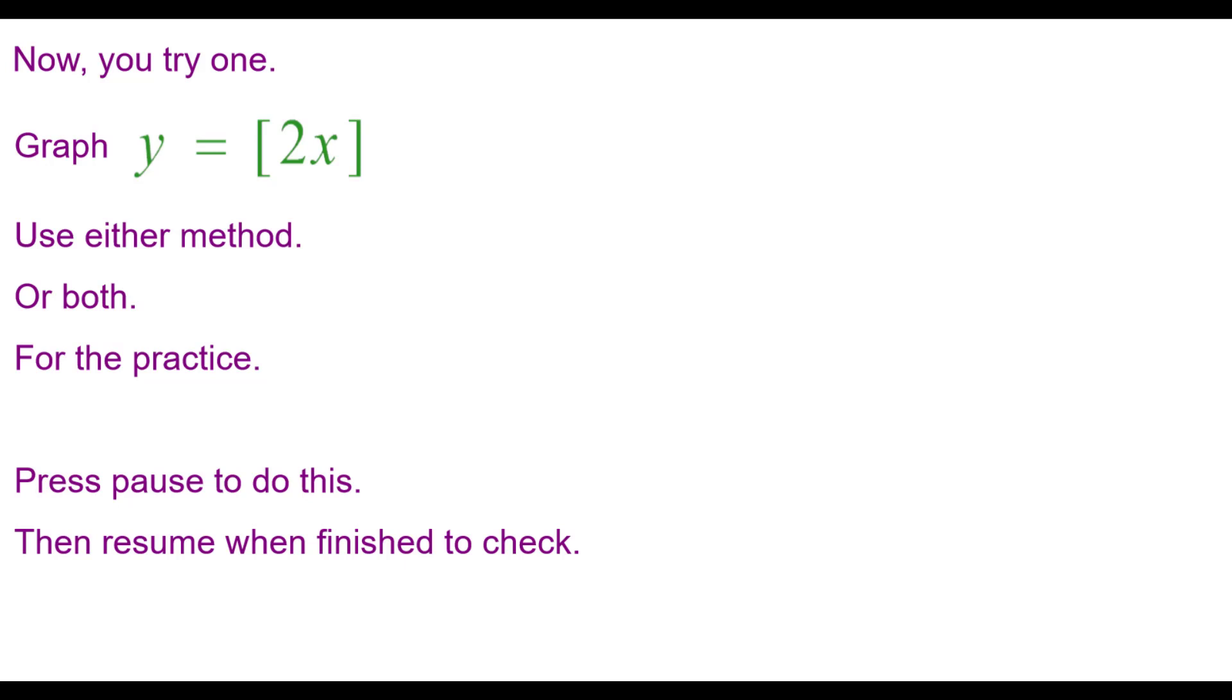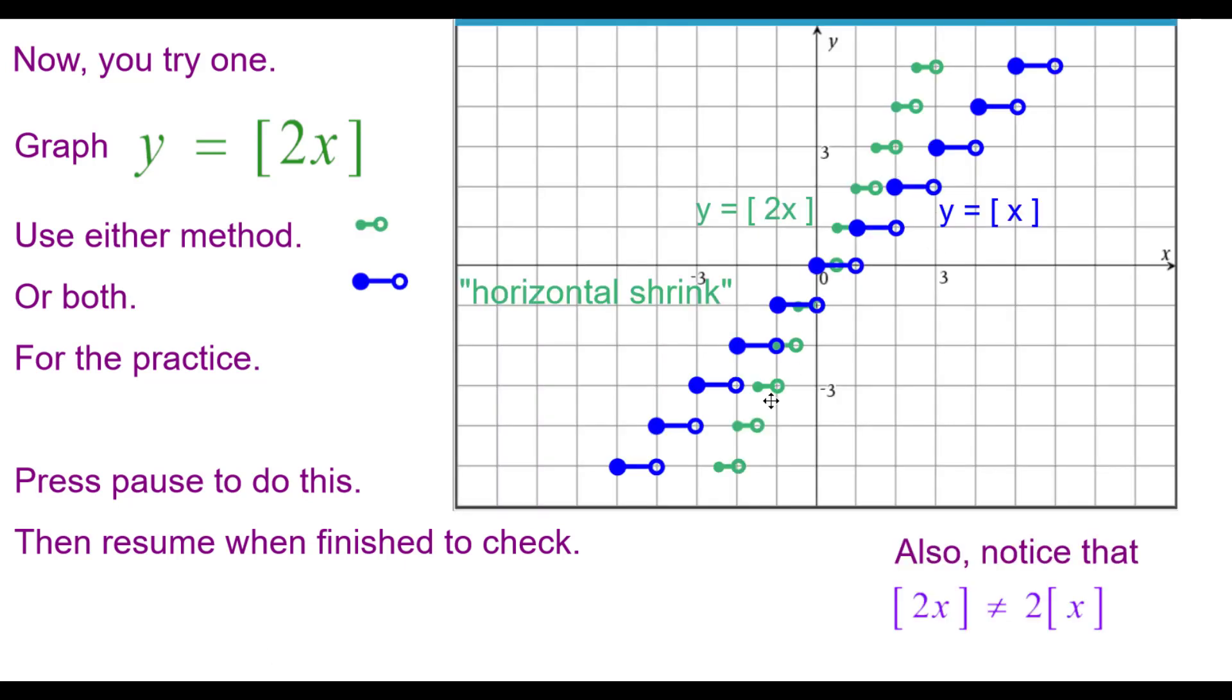Now you try one. Graph y equals the greatest integer of the quantity 2 times x. Use either method or both for the practice. Press pause to do this and then resume when you're finished to check your answer. And here is your answer right here.